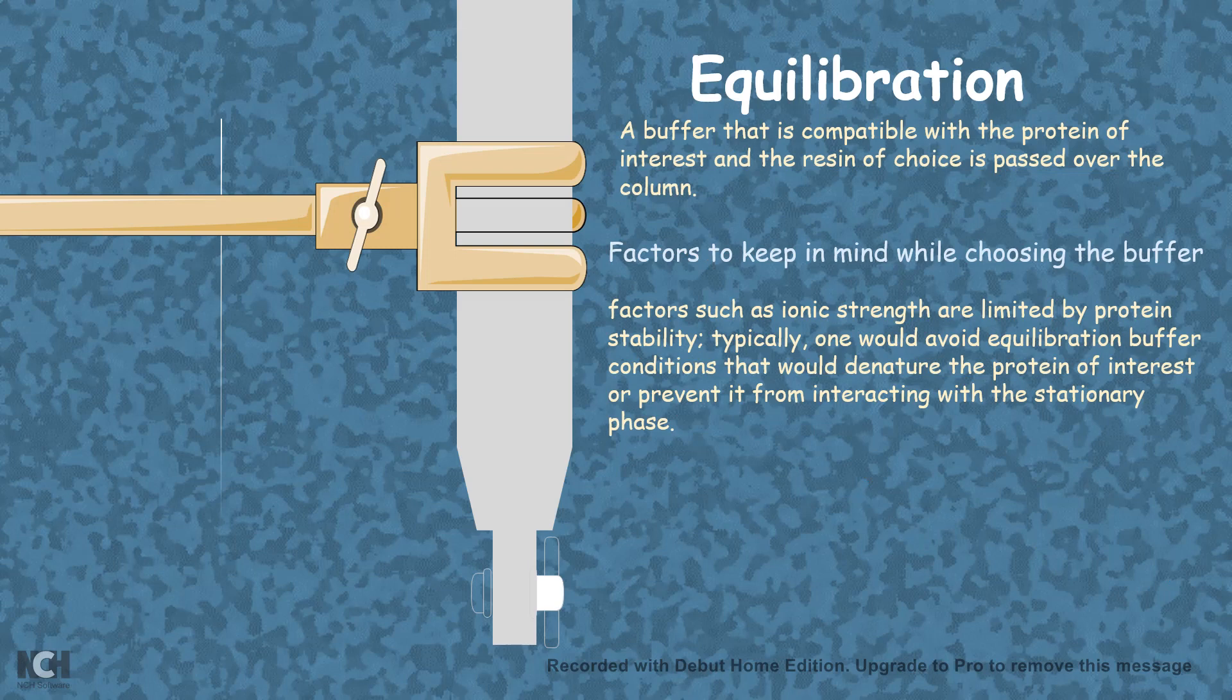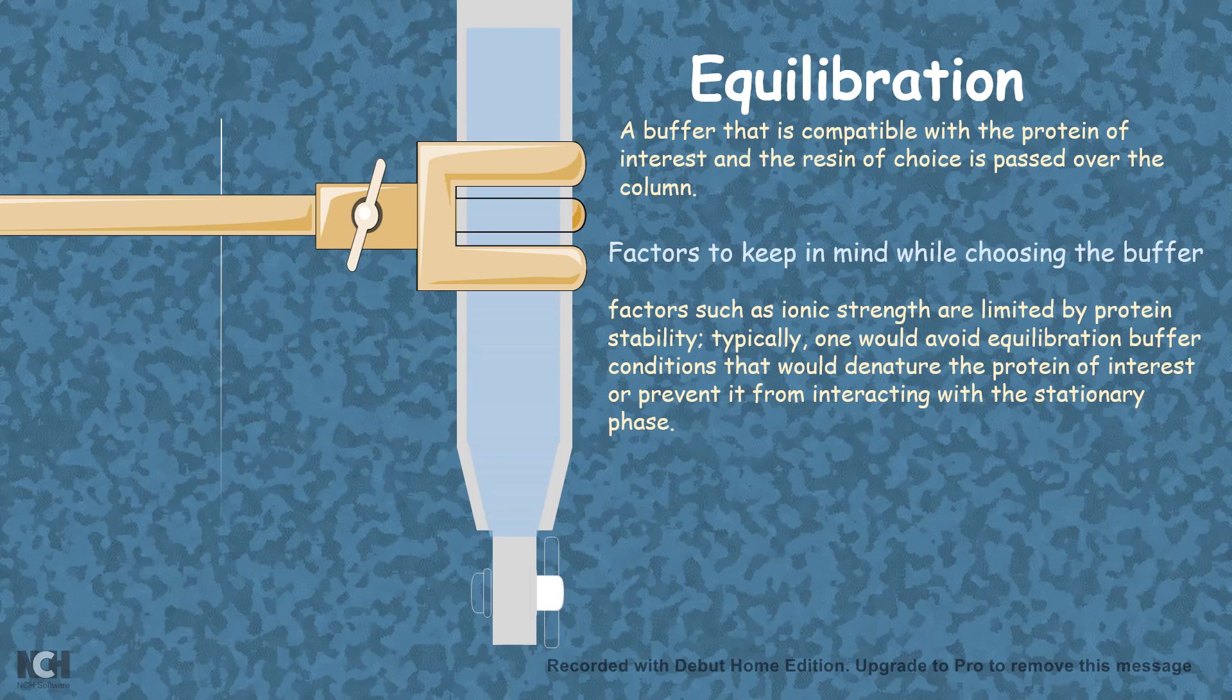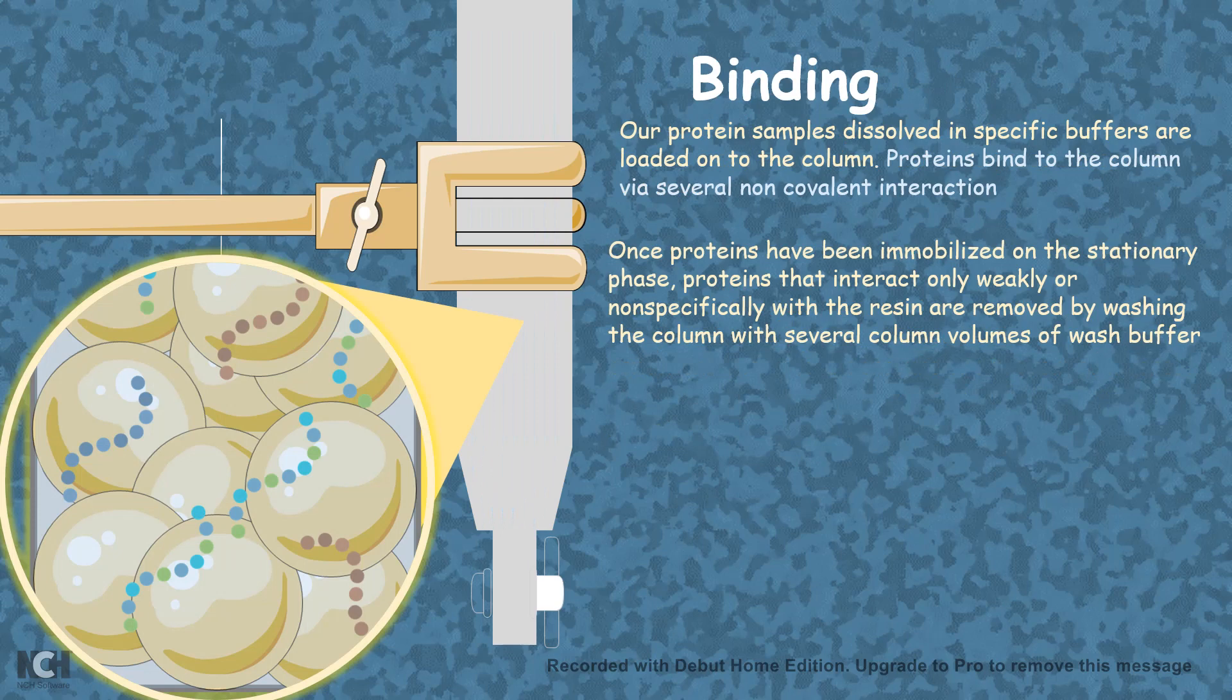Equilibration, when an equilibration buffer runs through the column to make it wet and more applicable for sample binding. Then the binding step itself where you provide your sample, it might be DNA or protein, and your protein is bound to the affinity column by a specific molecular interaction which are mostly non-covalent in nature.